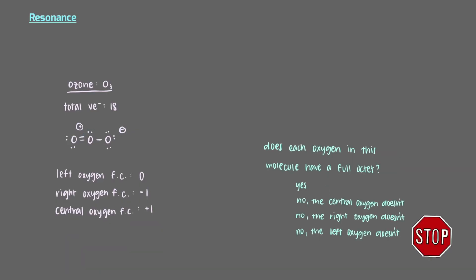Does each oxygen in this molecule have a full octet? Even though we have assigned formal charges to some of the atoms in this molecule, each atom has a full octet. If we look at the overall charge of the molecule, it is zero. So that's it. This is a correct Lewis structure for ozone.